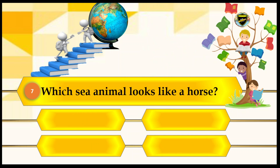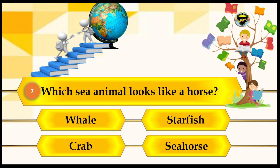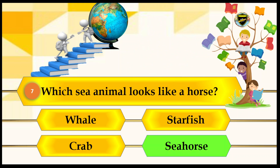Let's see the next one. Which sea animal looks like a horse? Here are your options: whale, starfish, crab, and seahorse. The answer is seahorse. Let's lock it. Yes, that's the correct answer.